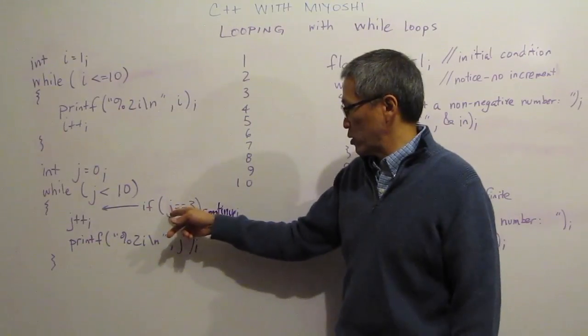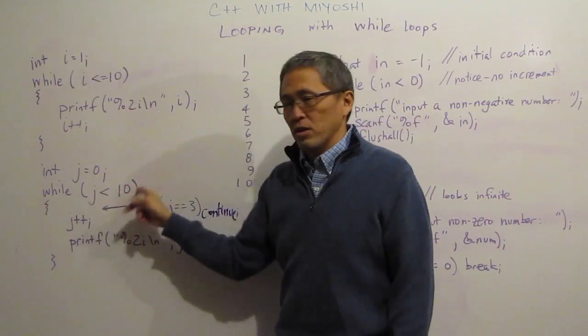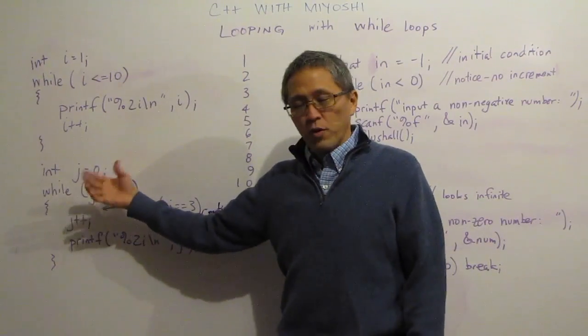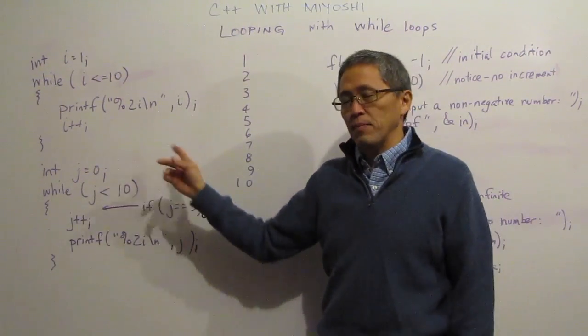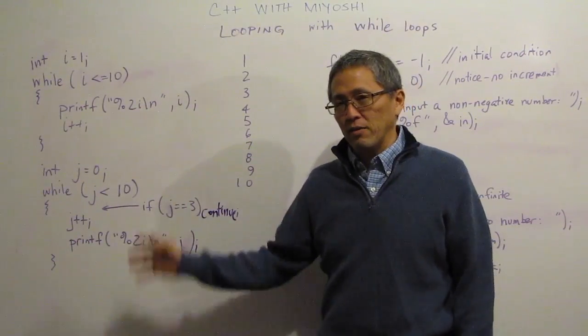Well, why is that? It comes to this j equals 3 and it's going to continue. Well, all it's continue does is come back here to my start of my while loop. Unfortunately, there's no incrementing in while so it's just going to keep going and looping along, looping along because still j is 3. It never changed.